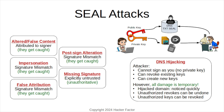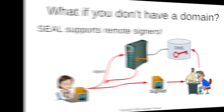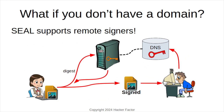They can revoke existing keys, so someone might see a revoked signature on a previously signed file. Or they can impersonate you by creating new keys and signing new media as you — but this doesn't impact existing signatures. The catch is that all damage is temporary. A hijacked domain will be quickly noticed. Unauthorized revocations can be undone, and unauthorized keys can be revoked. SEAL is dependent on DNS for storing the public key.